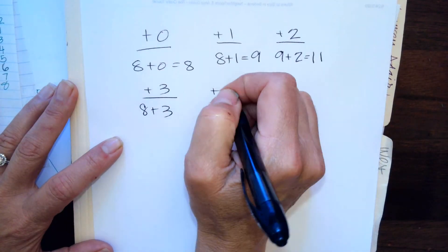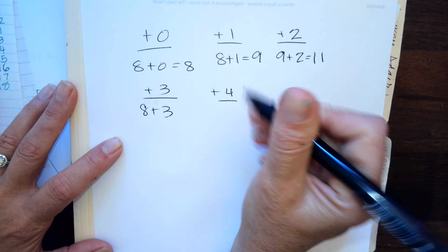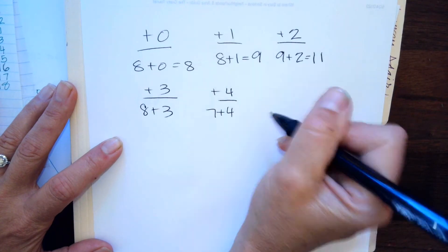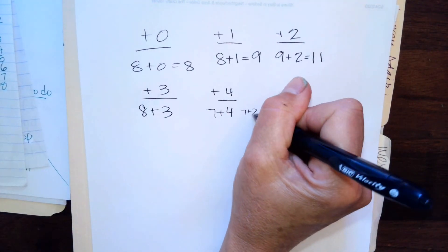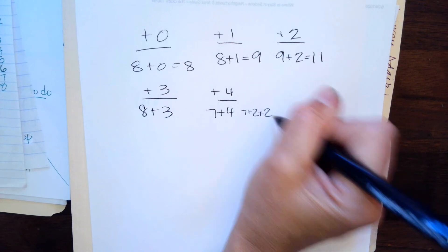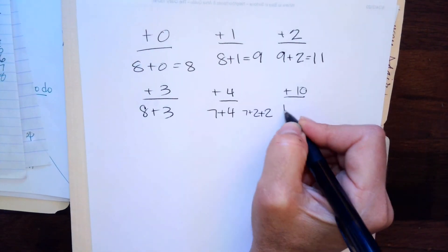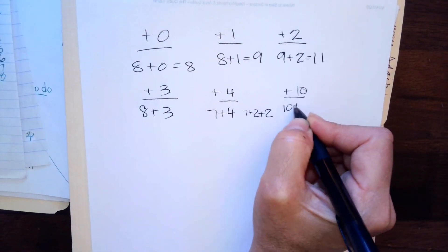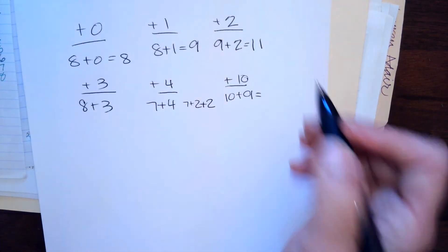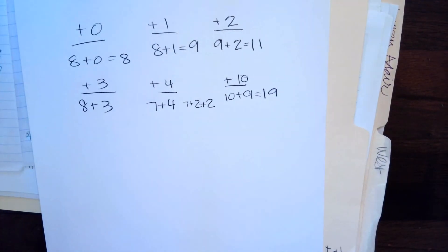Plus four, we break it into a plus two and a plus two. So seven plus four equals seven plus two: nine, plus two more, ten, eleven. Plus ten, we put a one in front of the number we're adding. So if I did ten plus nine, I rewrite my nine and put a one in front of it.